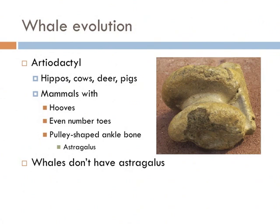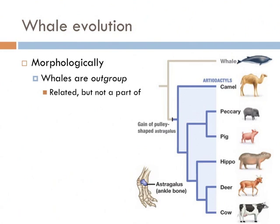Whales are part of a group of organisms collectively known as artiodactyls, which include hippos, cows, deer, pigs, and other things that generally taste good with ketchup on top of them. They are synapomorphic with the following traits: they have an even number of toes, they walk on hooves, and they have an astralagus — a pulley-shaped bone in the ankle that allows them to walk efficiently in a straight line. But whales don't have hooves or an astralagus, so how do they fit into this mix? The answer seems obvious: whales are an out-group to all these other creatures — related, but not a part of that group, because they aren't synapomorphic for the astralagus.